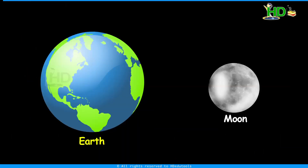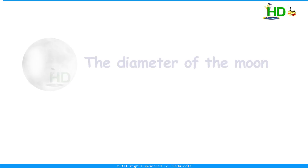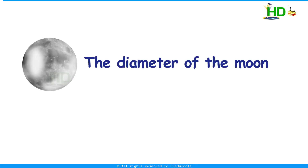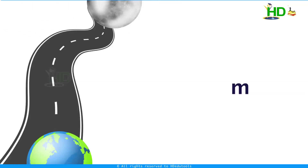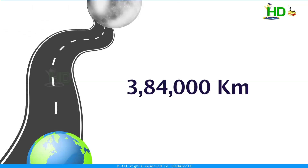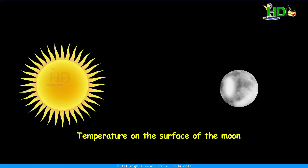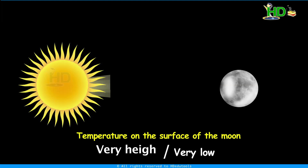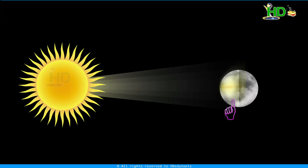Like earth, the moon is also almost a spherical body. The diameter of the moon is about 3,500 kilometers, approximately one-fourth of the earth. The distance of the moon from the earth is 384,000 kilometers. The temperature on the surface of the moon is either very high or very low. When the sun shines on its surface, the temperature rises to 110 degrees Celsius. When there is no sunlight, the temperature drops to minus 150 degrees Celsius.